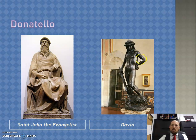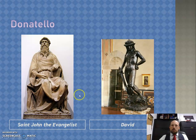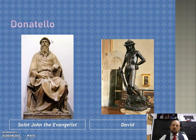Donatello depicted David as quite young, with a jaunty helmet or hat on. You can tell this is after his fight with Goliath because Goliath's head is on the floor. For a very different piece, here's his statue of St. John the Evangelist done in marble. It has this sort of geometric triangular pose, and you can really see the realism in the folds of the cloak.